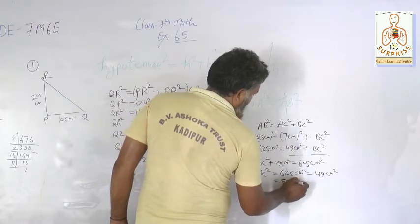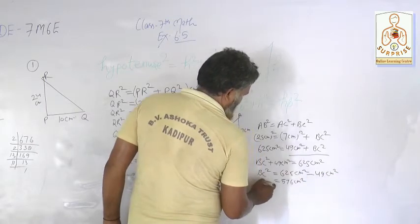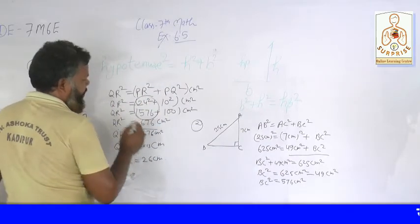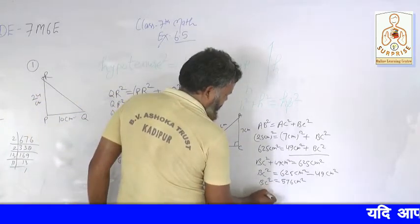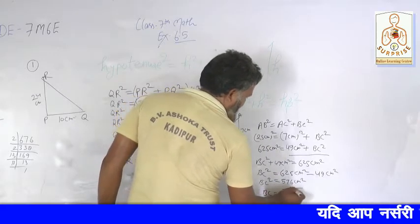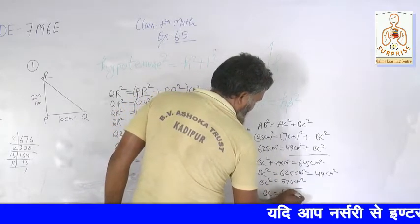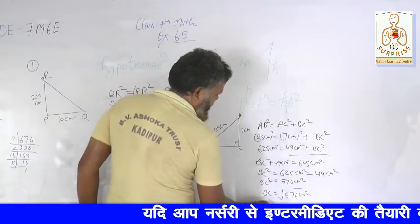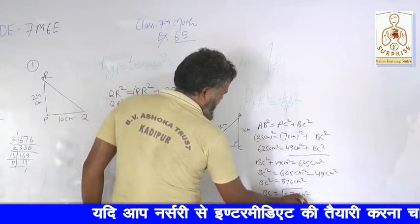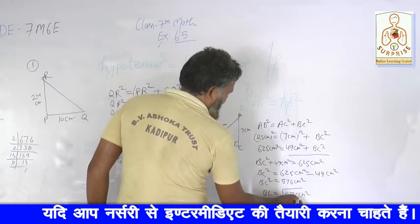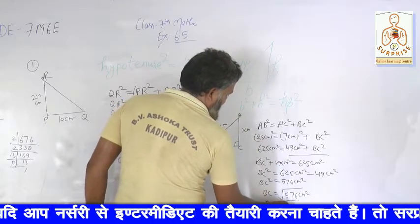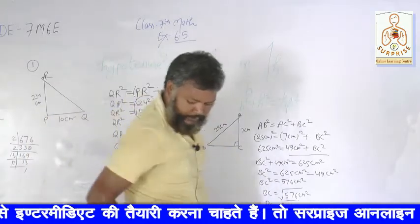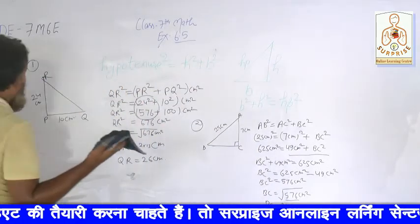Minus karne par aaya 576 cm square. Humne dekha tha 576 kisaka hai — 24 ka hai. Toh BC is equal to under root 576 cm square, yani BC is equal to 24 cm. Yeh aapke doosre question ka answer. I hope aapko acchi tarah samajh mein aa gaya.